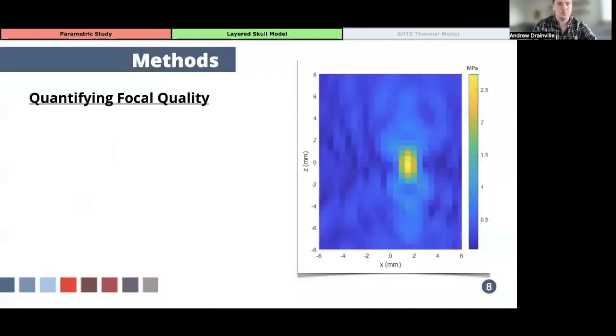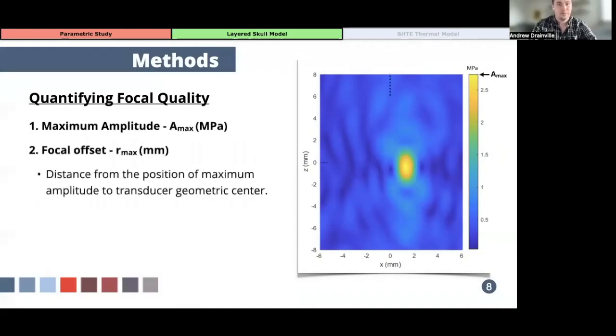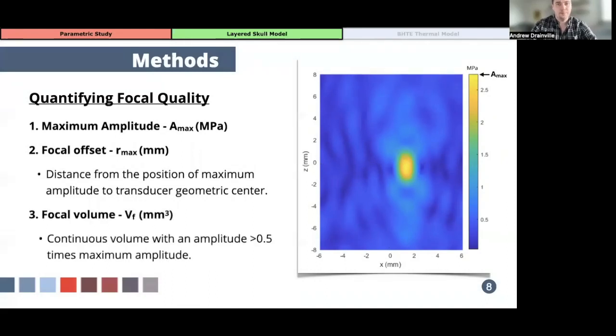For the acoustic simulations, once the field near the focal point was calculated by Siva, a MATLAB script was written to interpolate results and improve the spatial resolution of the acoustic field. Then to quantify focalization, we use the maximum acoustic amplitude near the focus, the focal offset, which is given by the distance from the position of the maximum amplitude to the geometric focus of the transducer, and the focal volume, which was determined as the size of a continuous volume with an amplitude that's greater than one-half of the maximum amplitude.